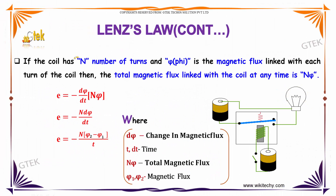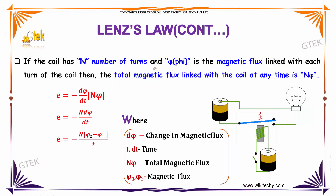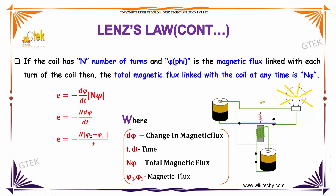If the coil has n turns and phi is the magnetic flux linked with each turn of the coil, then the total magnetic flux linked with the coil at any time is given by n into phi.